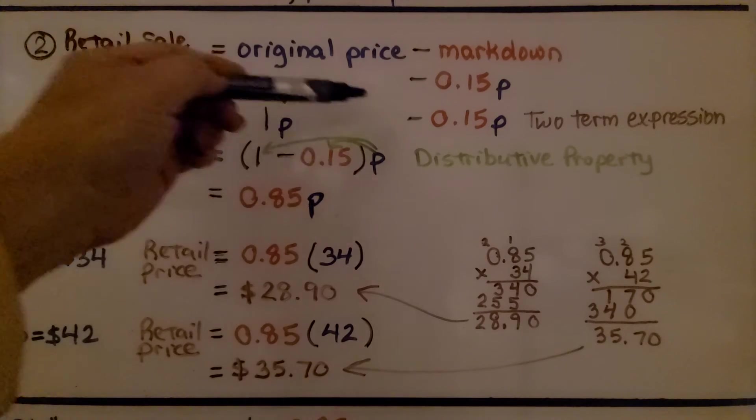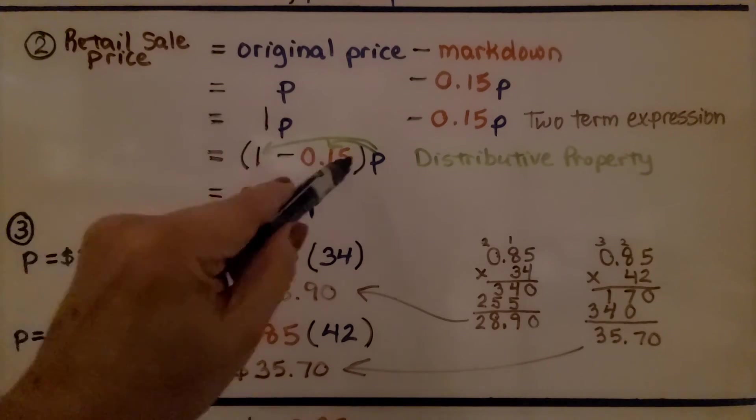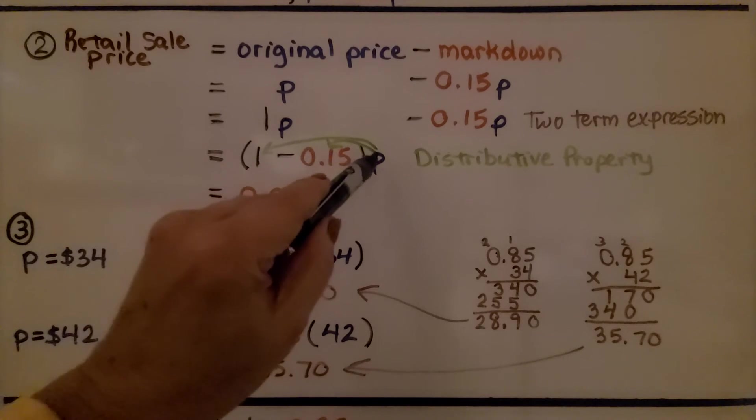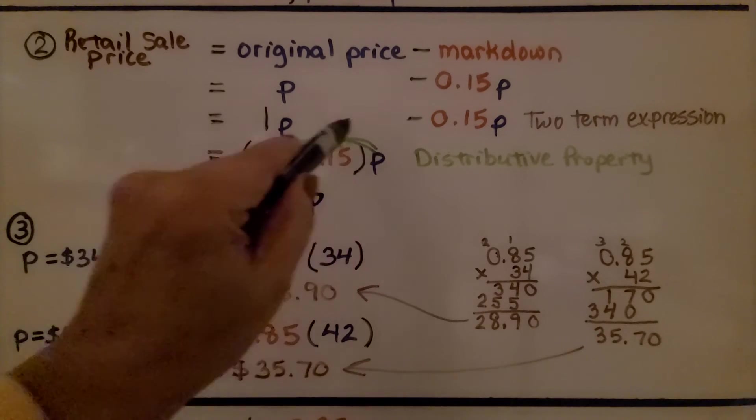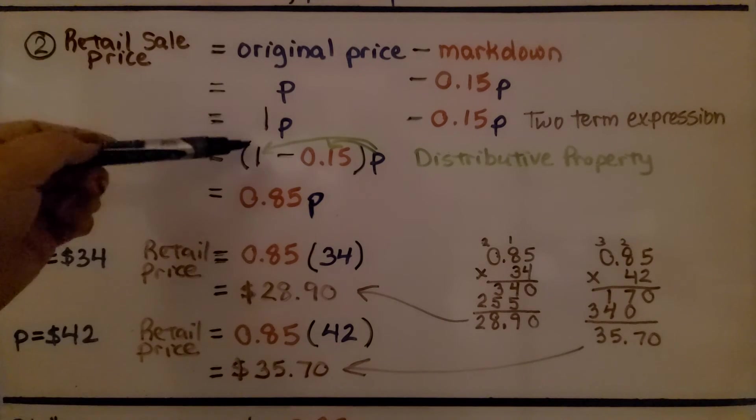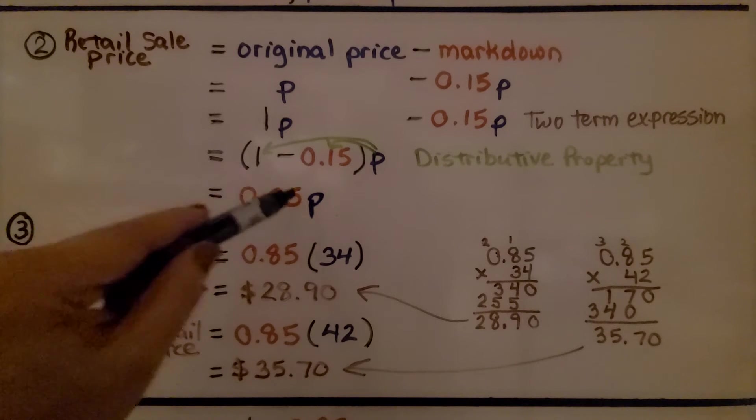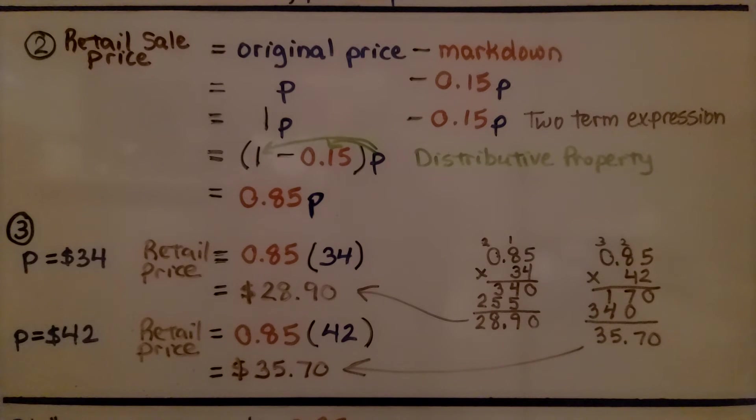So since we've got one minus 15 hundredths, we can do that inside of parentheses. If we distribute the P, we'll have one P minus 0.15 P. One minus 15 hundredths is 85 hundredths. So we have 85 hundredths P as our expression.